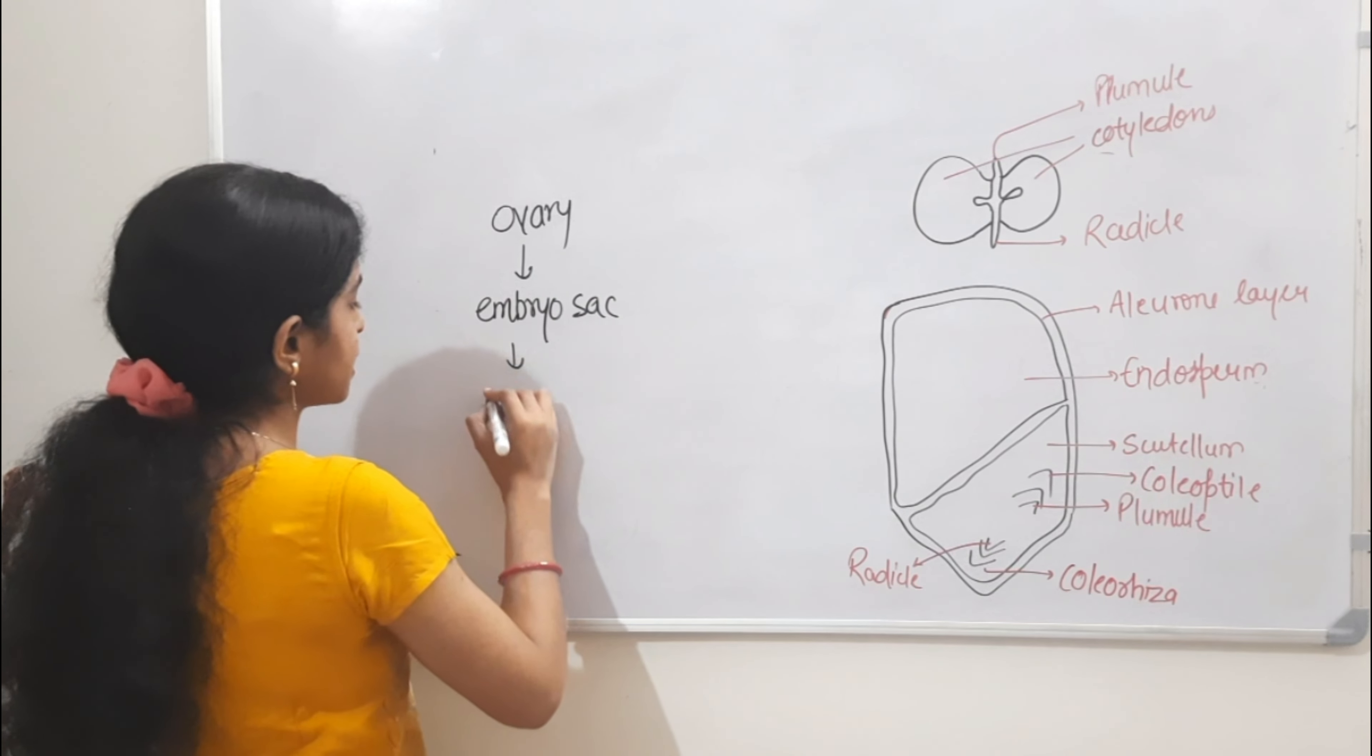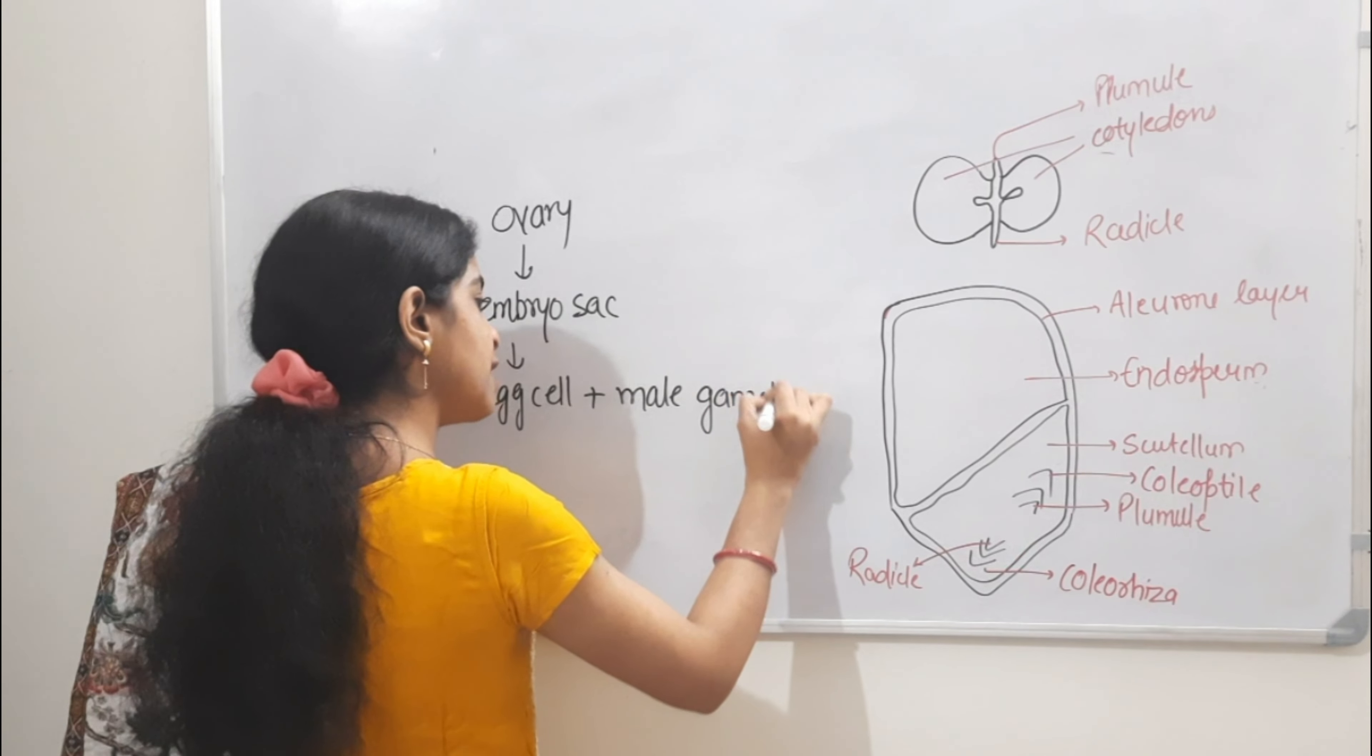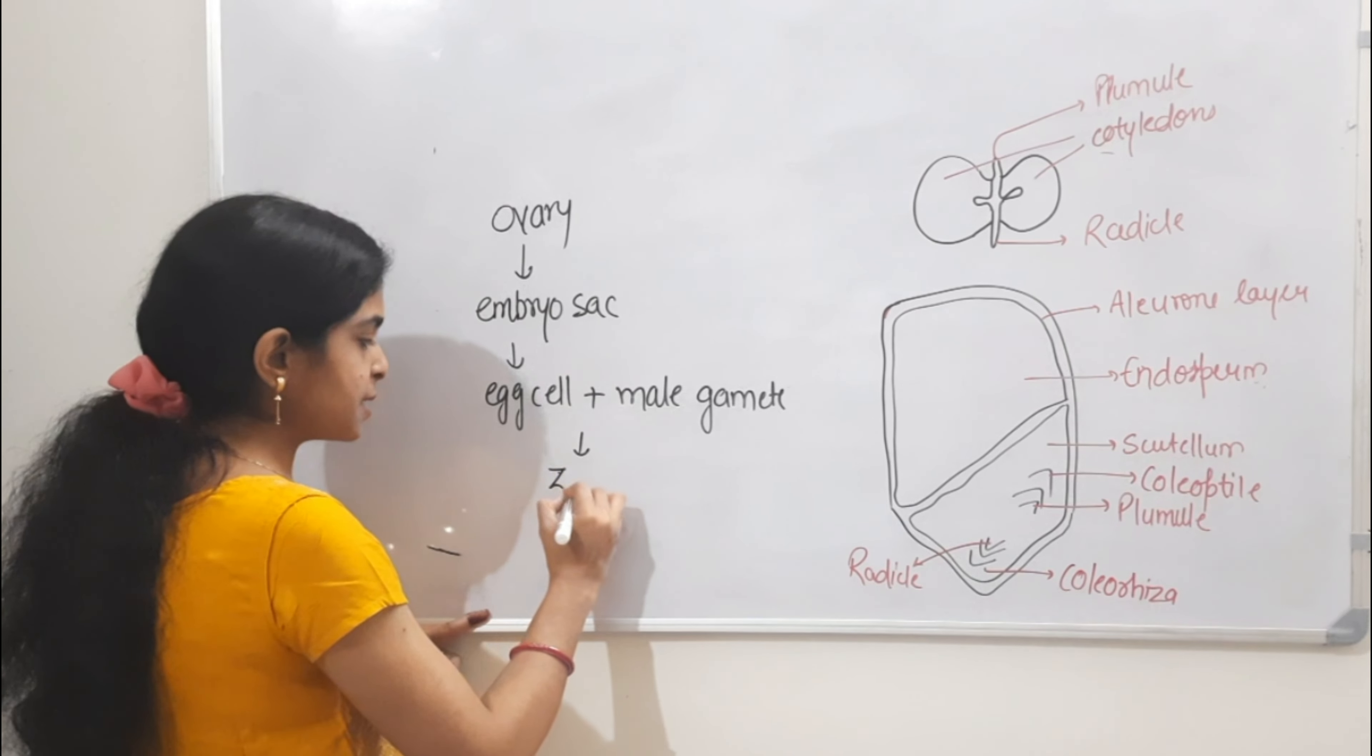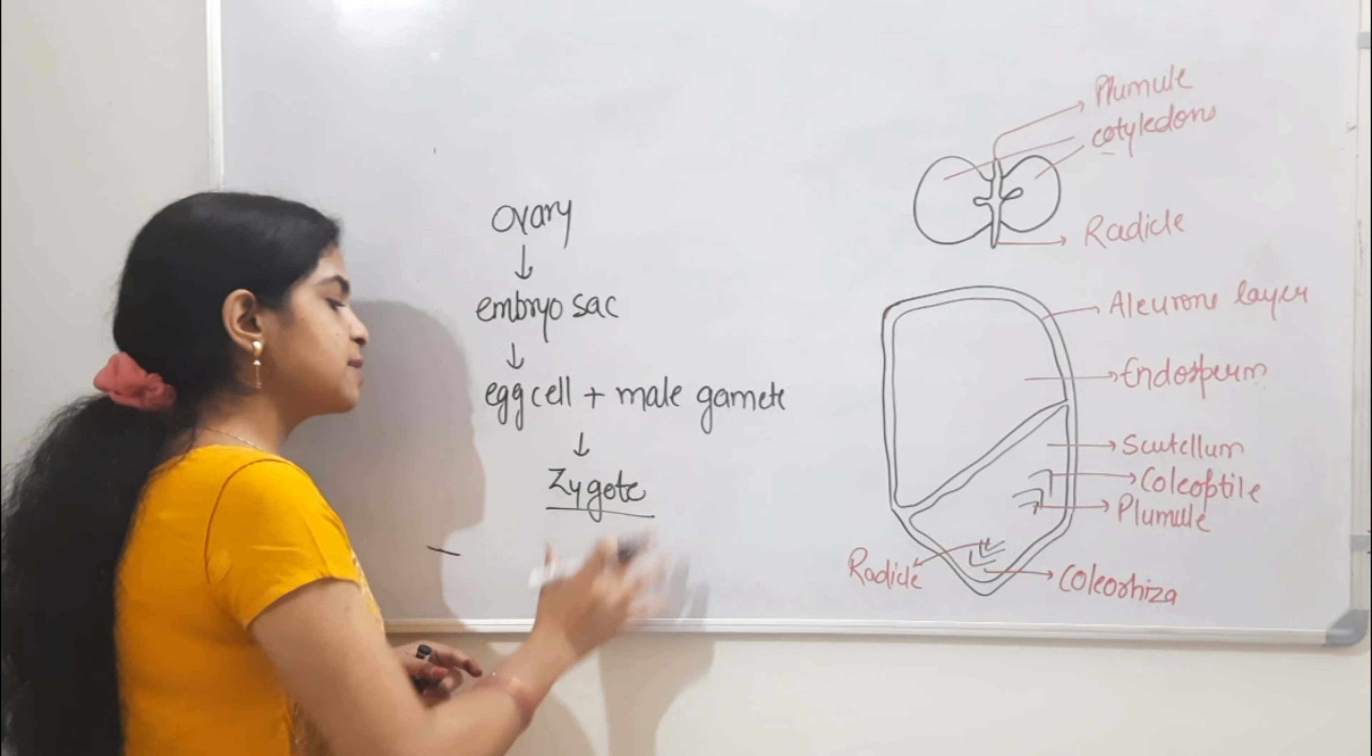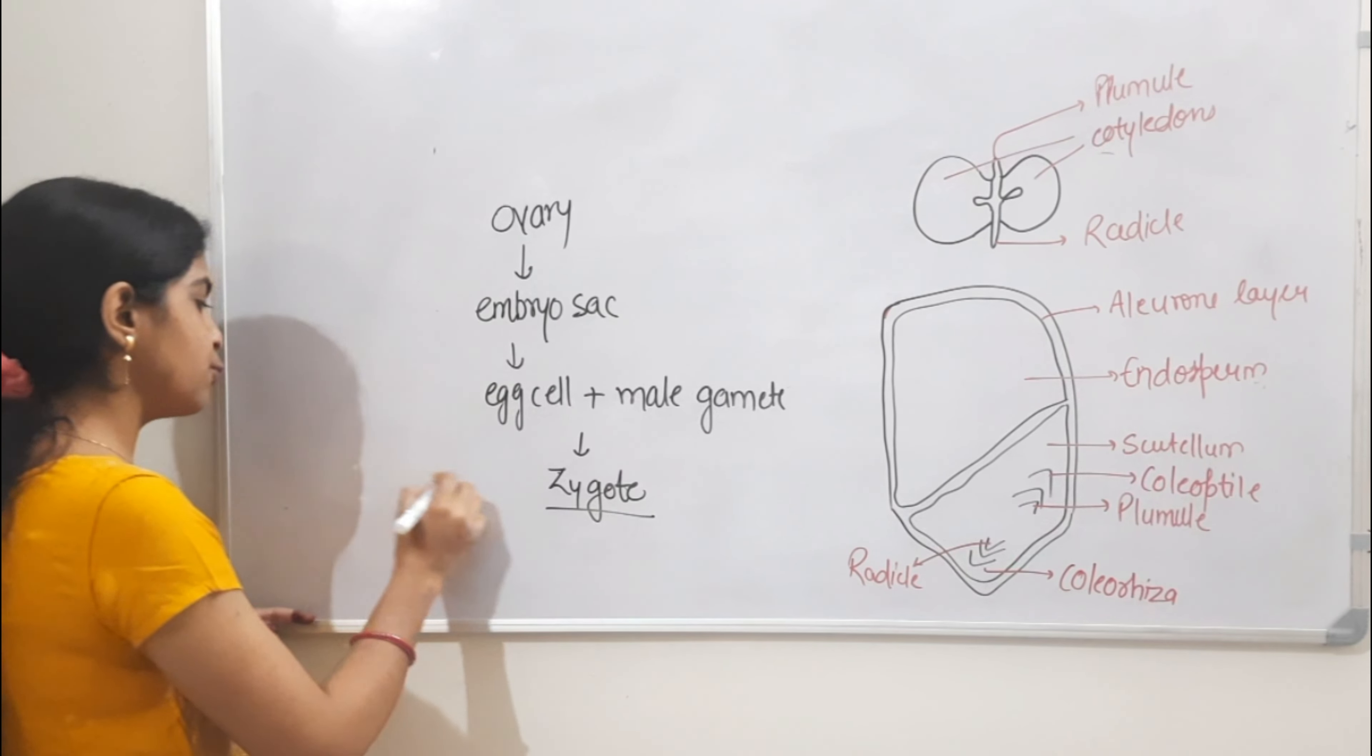Embryo sac contains egg cell. Egg cell plus male gamete fusion with a single male gamete - what does it make? It will make a zygote.